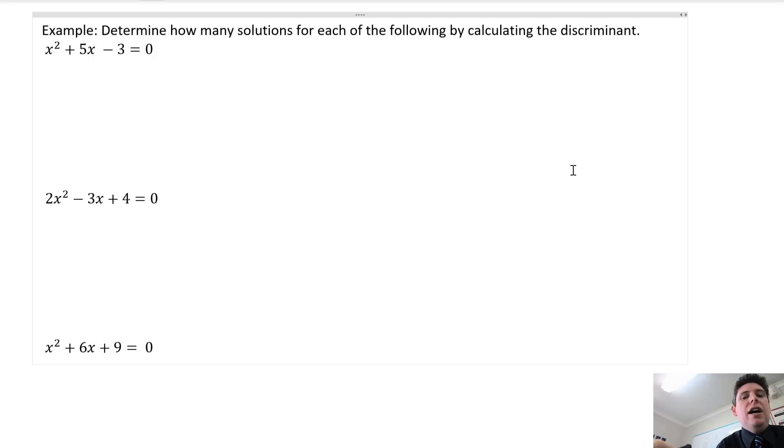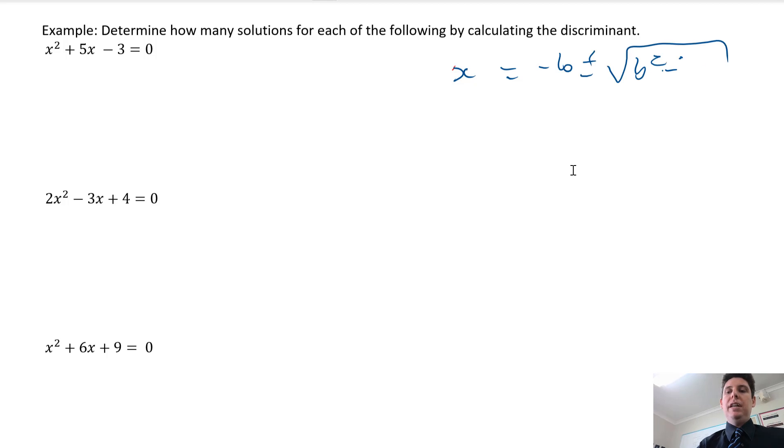This question is just asking how many solutions are there? That's all it wants to know. We're not actually solving. The bit inside the square root of the quadratic formula is called the discriminant. The bit inside the square root is called the discriminant: b squared minus 4ac.